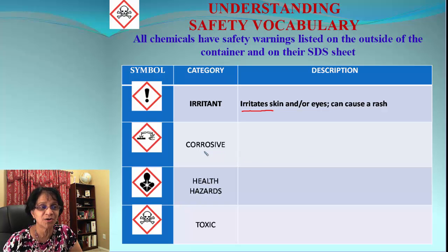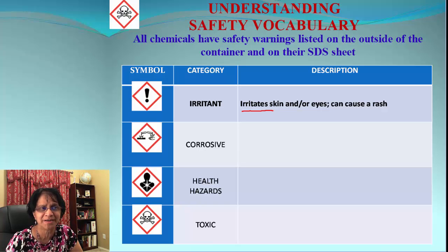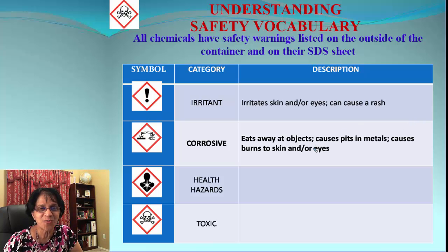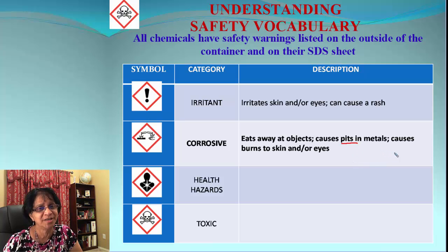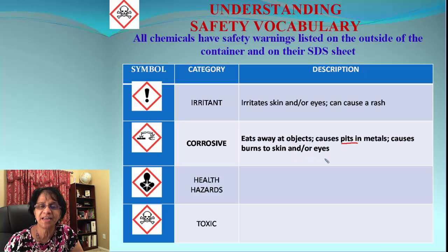Next is corrosive. If you look carefully at the GHS symbol, you can clearly see it's as if the substance is eating up the metal. It eats away objects and can actually form pits in metals very quickly. It can do the same thing to your skin, causing burns to skin and eyes. So if any chemical is marked as corrosive, you have to be extremely careful.